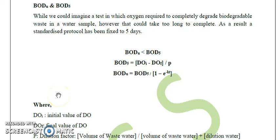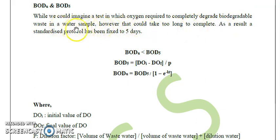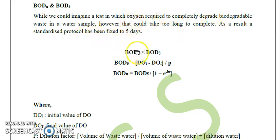BOD is generally measured as a five-day test, which is why it is also called BOD5. While we could imagine a test measuring the oxygen required to completely degrade a water waste sample, such a test would take too long to be practical. As a result, it has become standard practice to measure and report oxygen demand over a shorter period of five days, called BOD5.